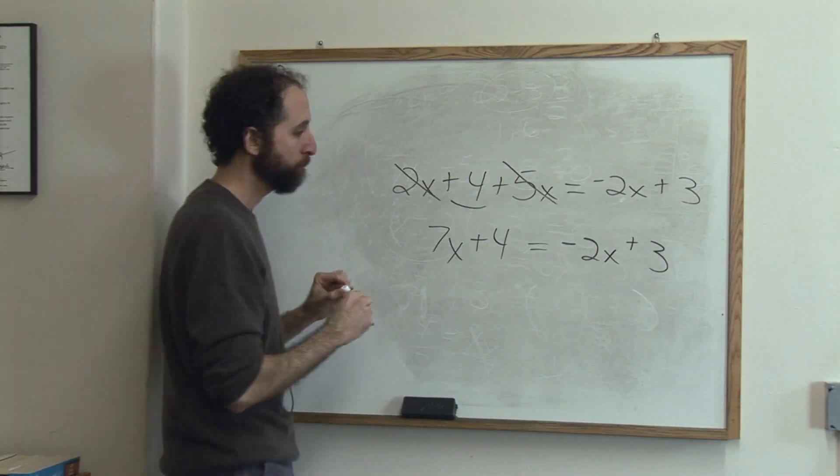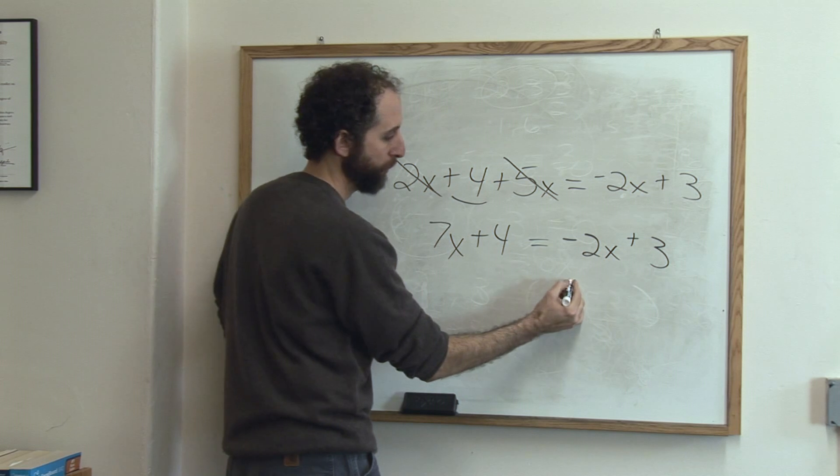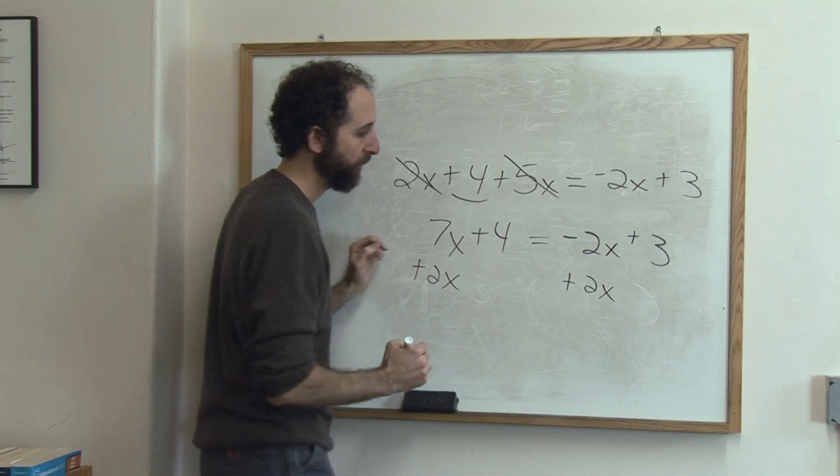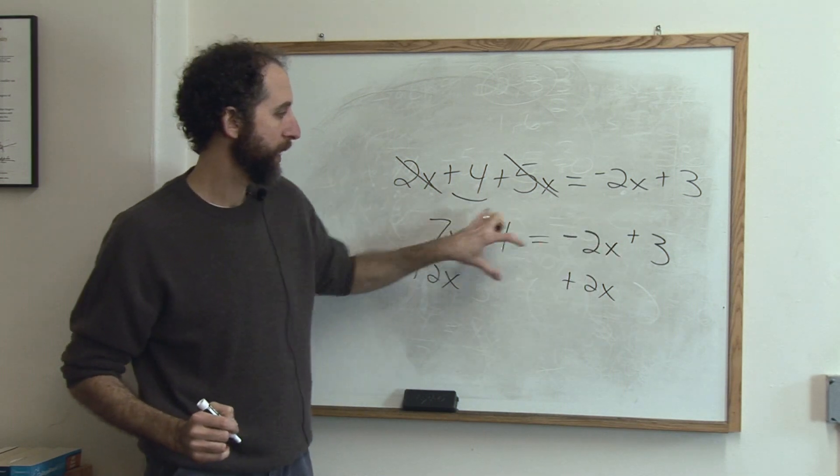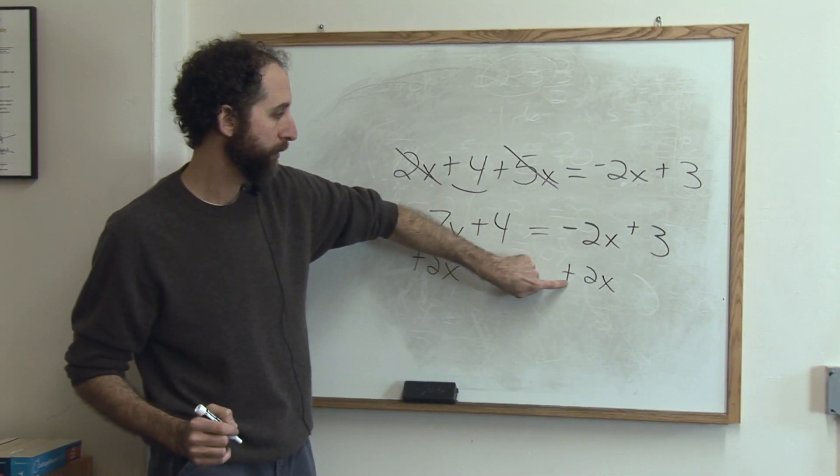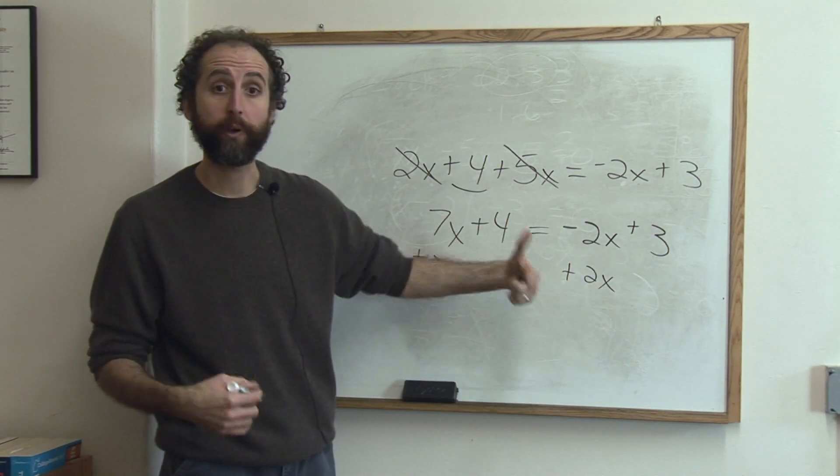So here's how we combine across. Let's say we want all the x's to be on this side and all the numbers over there. So we're going to add 2x to both sides. Remember when you're moving from one side to the other, when you're eliminating this from this side, you're going to do the inverse sign. So negative 2x, you add 2x to both sides.